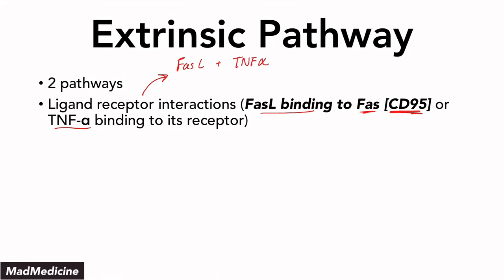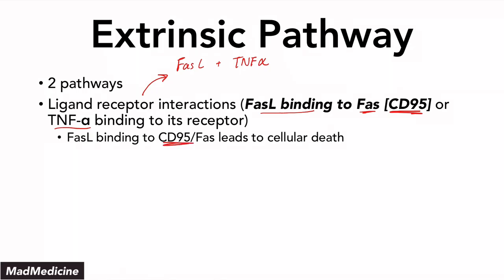When these ligands bind to their receptors, the cell receives a signal that it needs to die off. FAS ligand binds to CD95 and that leads to cellular death. One thing to remember: if you get a question in which CD95 is no longer expressed on a cell, the potential consequence is cancer. Cancer can occur because FAS ligand cannot bind to FAS to induce apoptosis.